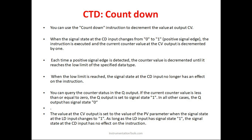In the up counter, when you were giving pulses, the current value was changing in a positive manner — from 0 going to 1, 2, 3. In this down counter, the current value will be going in the negative direction. So let us see how this down counter works.